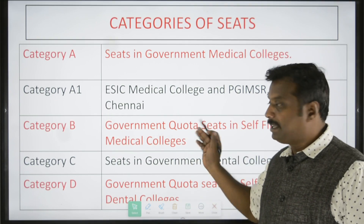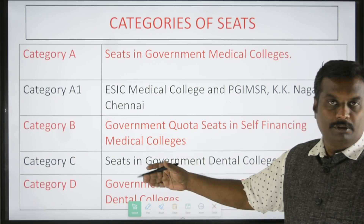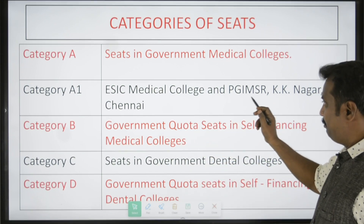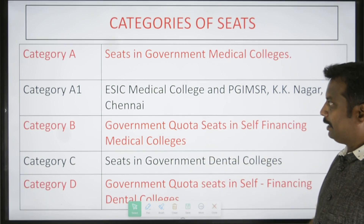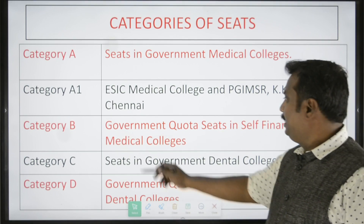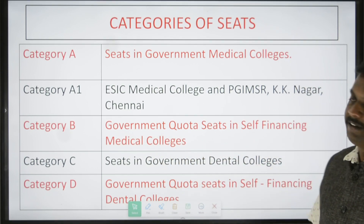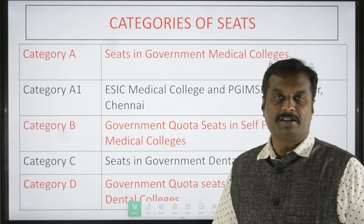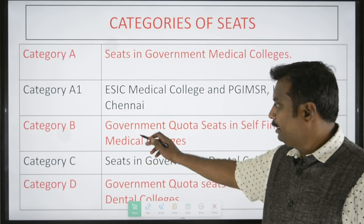Category A1 includes ESI, PGIMA, PGI, and MSR — that is Category A1. Category B is the government quota in self-financing medical colleges. The government quota seats in self-financing medical colleges are classified as Category B.